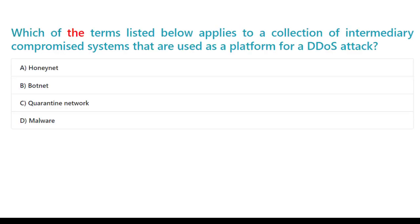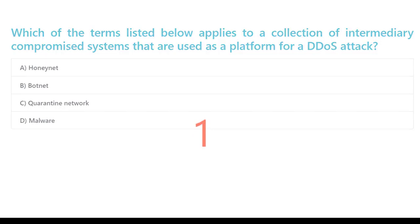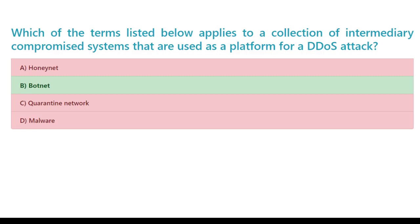Which of the terms listed below applies to a collection of intermediary compromised systems that are used as a platform for a DDoS attack? A. Honeynet. B. Botnet. C. Quarantine network. D. Malware. The correct answer is B. Botnet.